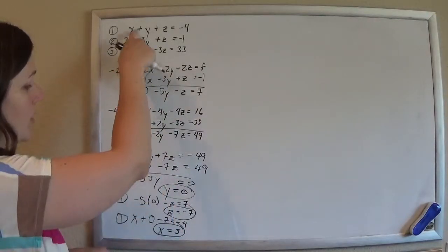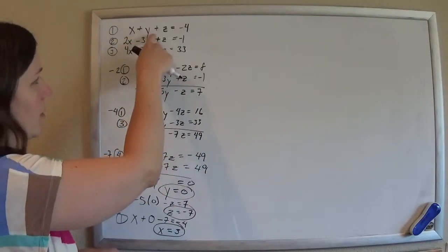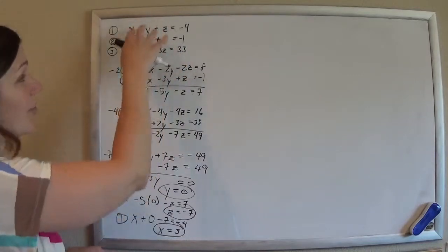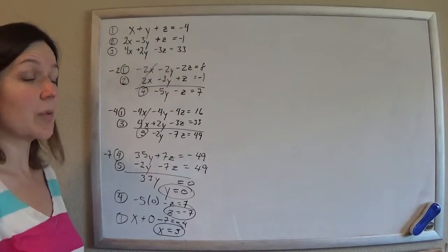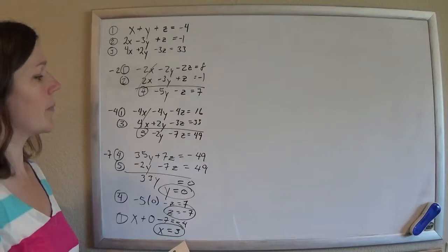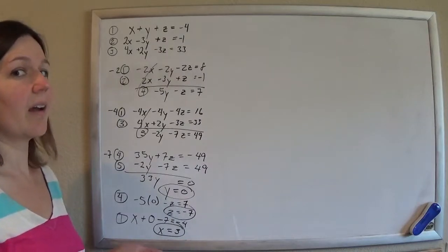So check them, right? Plug in 3 for the x, 0 for the y, and negative 7 for the z into every single one of those equations, and they should work. Pretty fantastic. All right. We're going to do it again another way next.